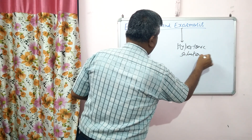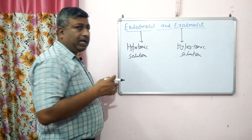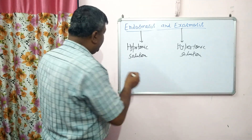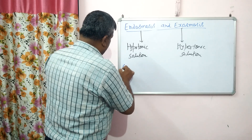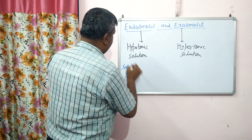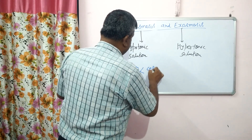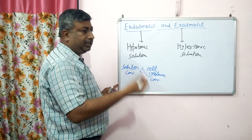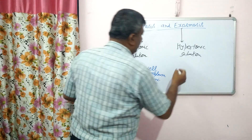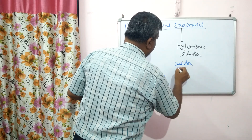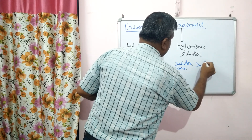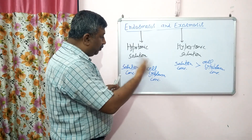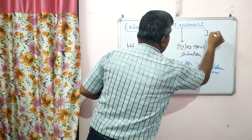Now what are these hypertonic and hypotonic solutions? These terms are related to the solution in which the cell is placed. Hypotonic solution is one where the solution concentration is less than the cell cytoplasm concentration. If the solution concentration in which the cell is placed is more than the cell cytoplasm concentration, then it is known as hypertonic solution.